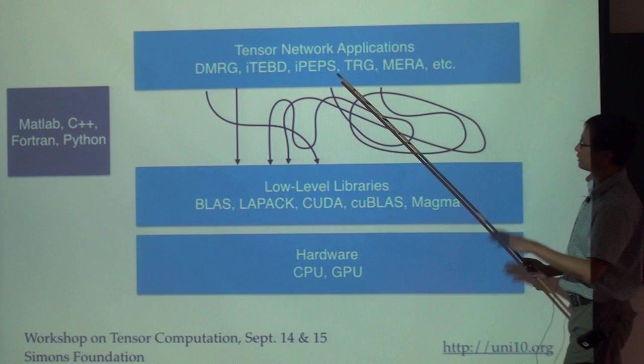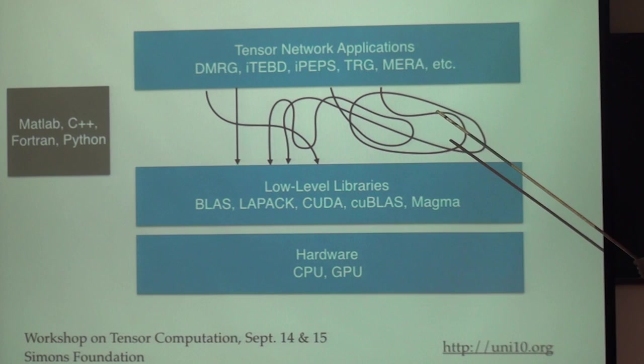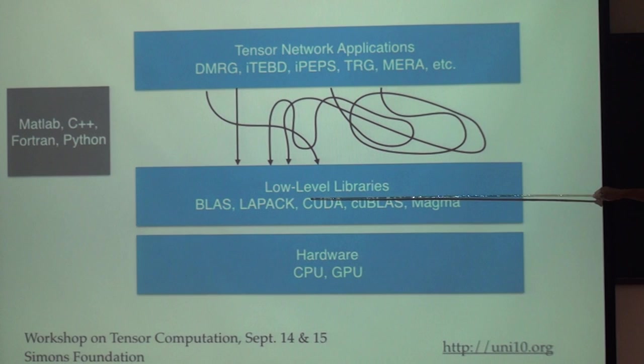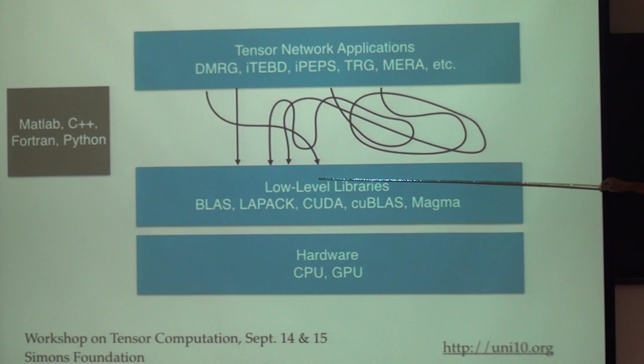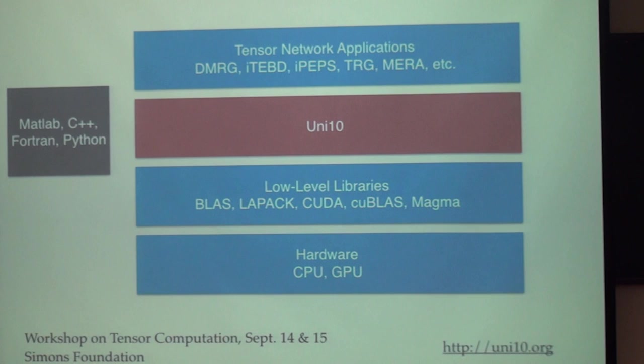This is the current situation. You have this nice hardware, you have these low level libraries, and you have these tons of algorithms that we want to program, it's different. But you can take your favorite language, I'm listing here Matlab, C++, Python, anything. And you can directly program this. At some point you want to kill yourself. So this is where we're coming, we build a middleware, we call it UniTensor. We want to simplify this stuff.